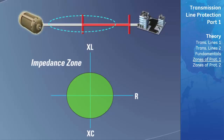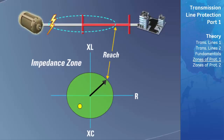First, we will discuss the zone of protection known as an impedance zone. Any impedance that falls within the radius of the circle indicates a fault that needs to be cleared. The reach indicates in ohms how far down the power system the zone of protection extends. This type of zone is inherently non-directional and will detect faults that occur in the reverse direction away from the point of measurement. This type of zone is normally used for generator backup protection.